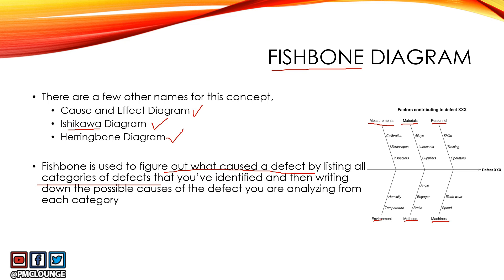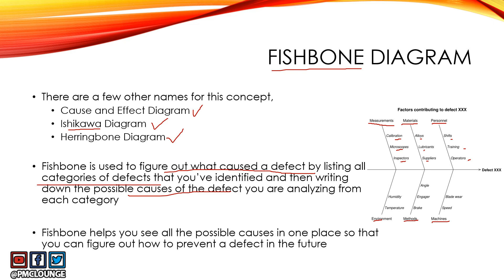Now that you have identified all these categories, what you're going to do is write down the possible causes of the defect that you're analyzing. So within Measurement there could be different causes — it could be a calibration issue, it could be microscopes, it could be inspectors. Within Materials the different causes could be alloys, lubricants, suppliers. Within Personnel you have shifts, trainings, operators. These are the possible causes that you see within the categories, so this is something that you're analyzing by category.